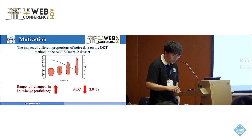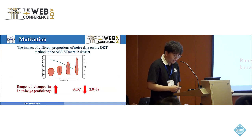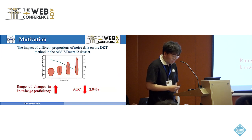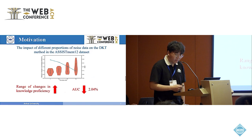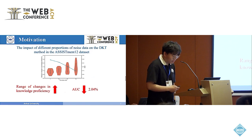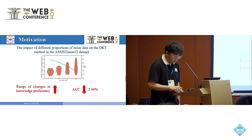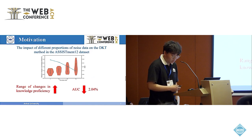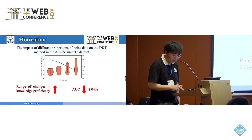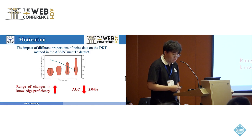To investigate the impact of abnormal interactions on KT models, we introduced random noise to assessment trial data by randomly inverting corresponding responses. There is a notable increase in the variability of students' knowledge states and the AUC metric declines by 2.04%. This mismatch between student answers and knowledge states negatively impacts tasks such as stably tracing students' knowledge and providing personalized learning.